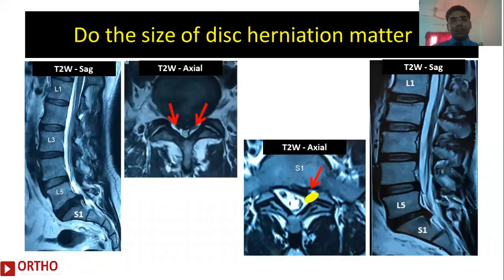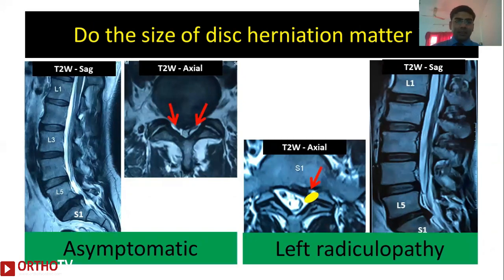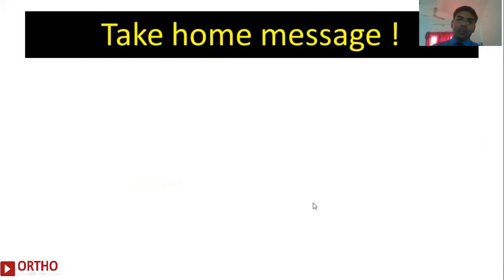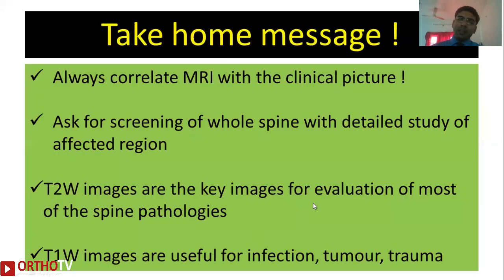Not everything you see on spine MRI is clinically important. On the left you can see a patient with a large disc herniation and on the right a patient with a small disc herniation. Despite having the large disc herniation, the first patient was asymptomatic, whereas despite having a small disc herniation, the second patient was symptomatic because it was directly compressing a nerve root. The take-home message is to always correlate MRI findings with the clinical picture.